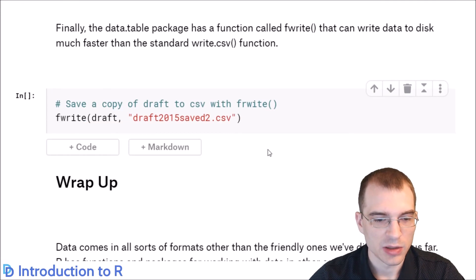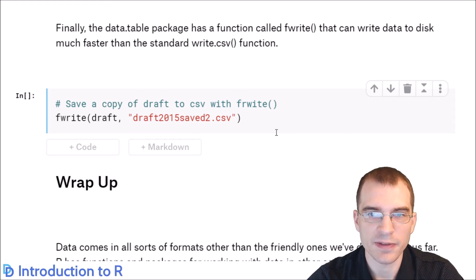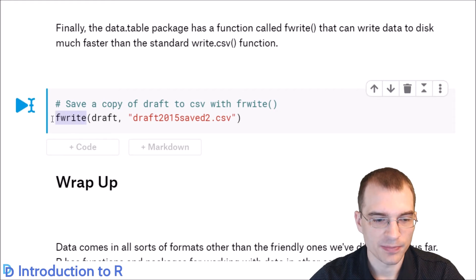The data.table package also has a fast data writing function called fwrite. You just call the function, pass in the data, and specify the file you want to write to. fwrite can write data substantially faster than the standard write.csv. If you happen to be wanting to dump a significant amount of data to disk, you might want to consider using this instead of the normal write.csv function. That should have created an output file for this kernel.